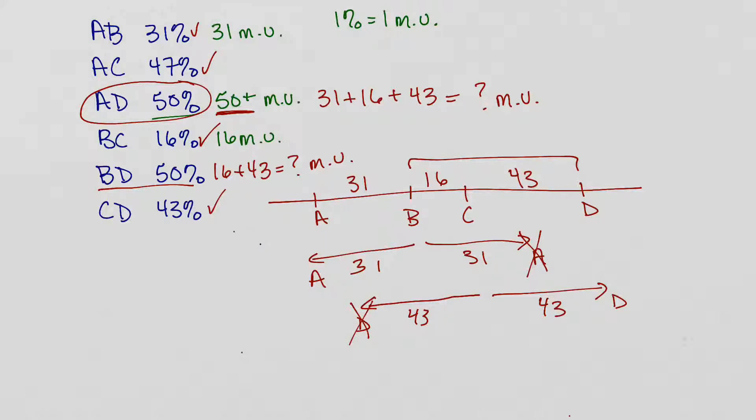For the rest of them, A and C, for example, is exactly 47. So 47 map units. We can see that A and B were exactly 31. We can see that C and D were exactly 43, right? So it's easy to determine the distance between them if the recombination frequency is below 50%. Once we get to 50%, you've actually got to put together the chromosome map and count up or add up the distance between the two genes that you're specifically looking at.